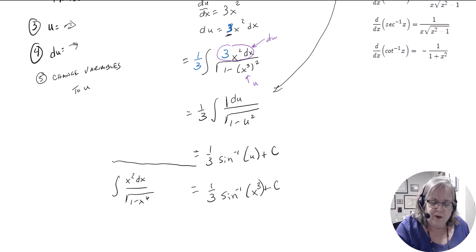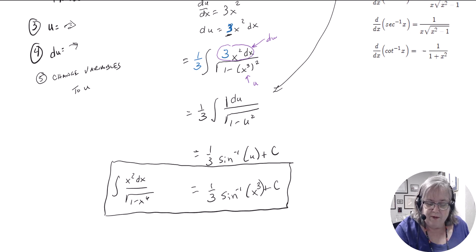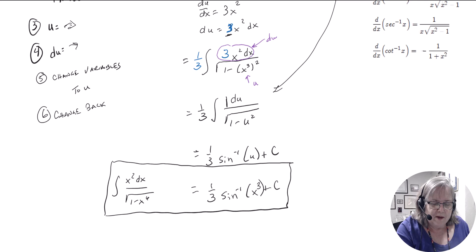That's what the integral of x squared dx over the square root of 1 minus x to the sixth looks like. Your list may have more parts or may be more brief. Some people add steps like 'change it to u,' then 'change it back to the given variable,' and don't forget the plus C.